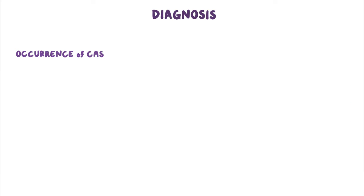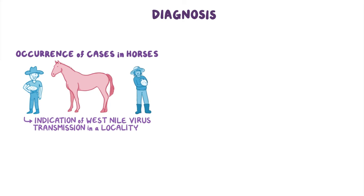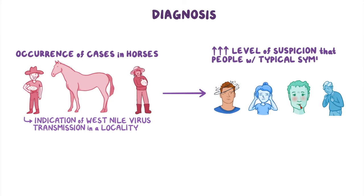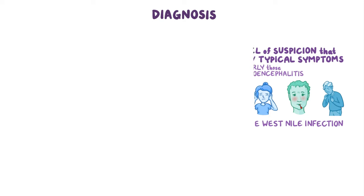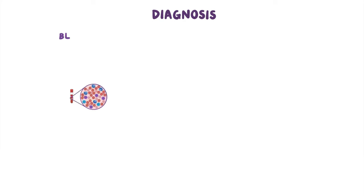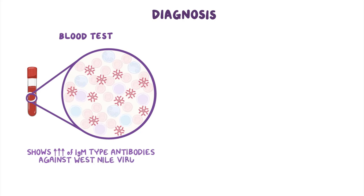The occurrence of cases in horses is a good indication of West Nile virus transmission in a locality, and should increase the level of suspicion that people with typical symptoms, particularly those with meningoencephalitis, may have West Nile virus infection. Diagnosis is usually made by a blood test which shows an increase in IgM-type antibodies against West Nile virus.